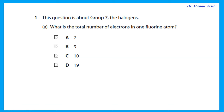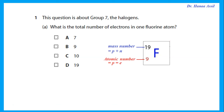The first question is about group 7, the halogens. What is the total number of electrons in one fluorine atom? In order to answer this, we look at the periodic table. The smaller number is the atomic number, which is the number of protons and also the total number of electrons. The total number of electrons in fluorine is nine.